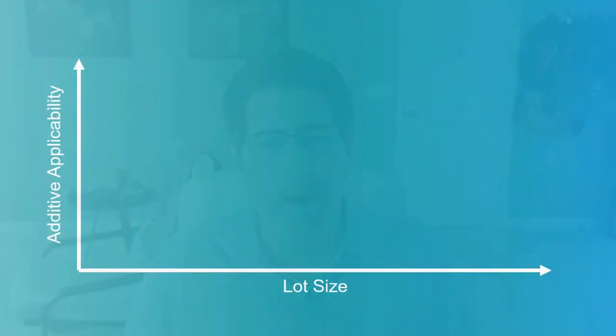Another thing to consider is the lot size of what you're producing. If you're manufacturing 50 to maybe 1,000 parts, then additive might be an attractive option. But if you're manufacturing 50,000 parts, then it will probably be more economical to use a legacy production method in the majority of cases. Different technologies have different curves, as some can print more parts in a single job than others. In general, additive is great for smaller lot sizes, but applicability decreases as lot sizes go up.